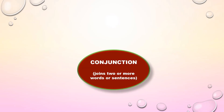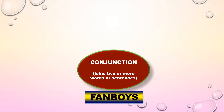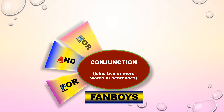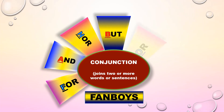A conjunction is a word which merely joins together sentences and sometimes words. In short, we can call them joining words. To remember easily, we can use the mnemonic FANBOYS. They are: for, and, nor, but, or, yet, so.